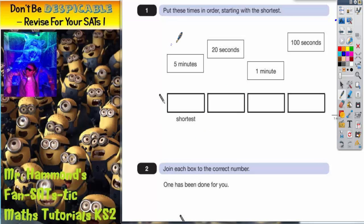Question one: put these times in order starting with the shortest. Now the first thing you'll notice is they're not all in the same format. We've got five minutes and one minute, then we've got 20 seconds and 100 seconds. The easiest thing to do here is turn them all into seconds and it'll be easy to compare.